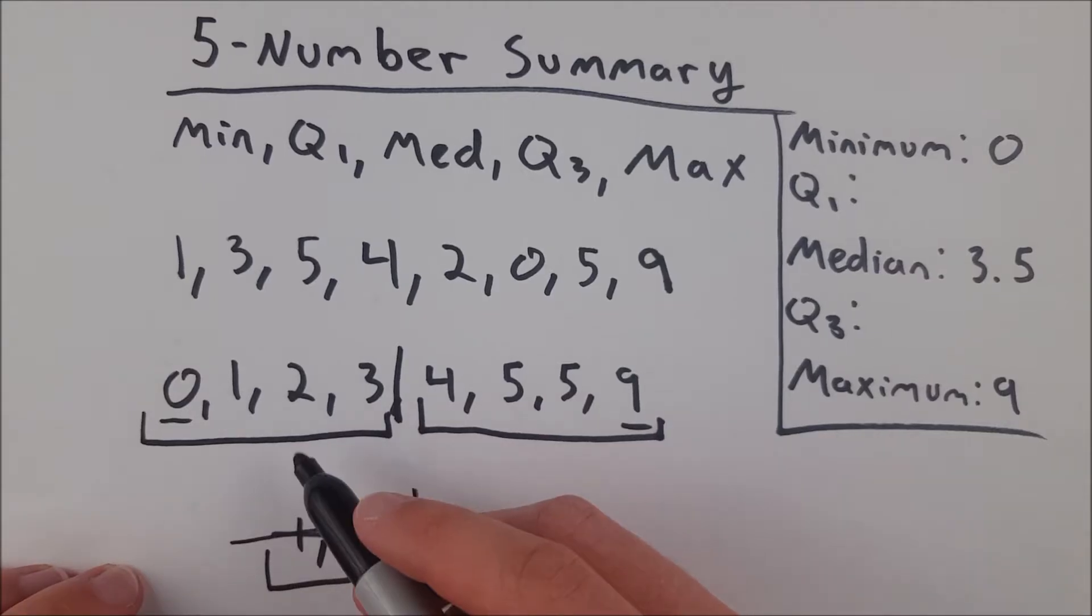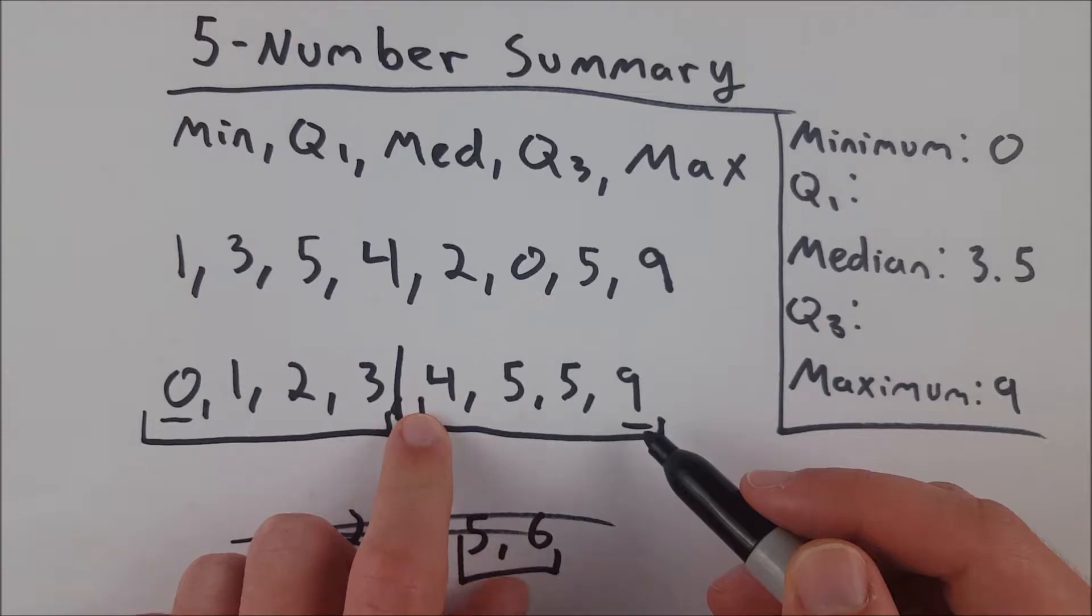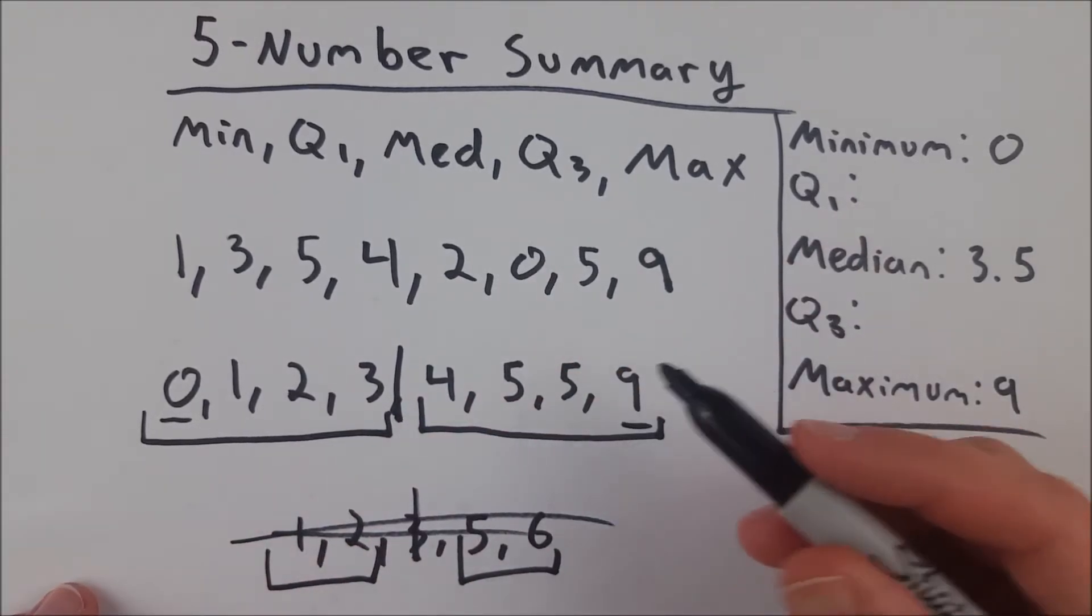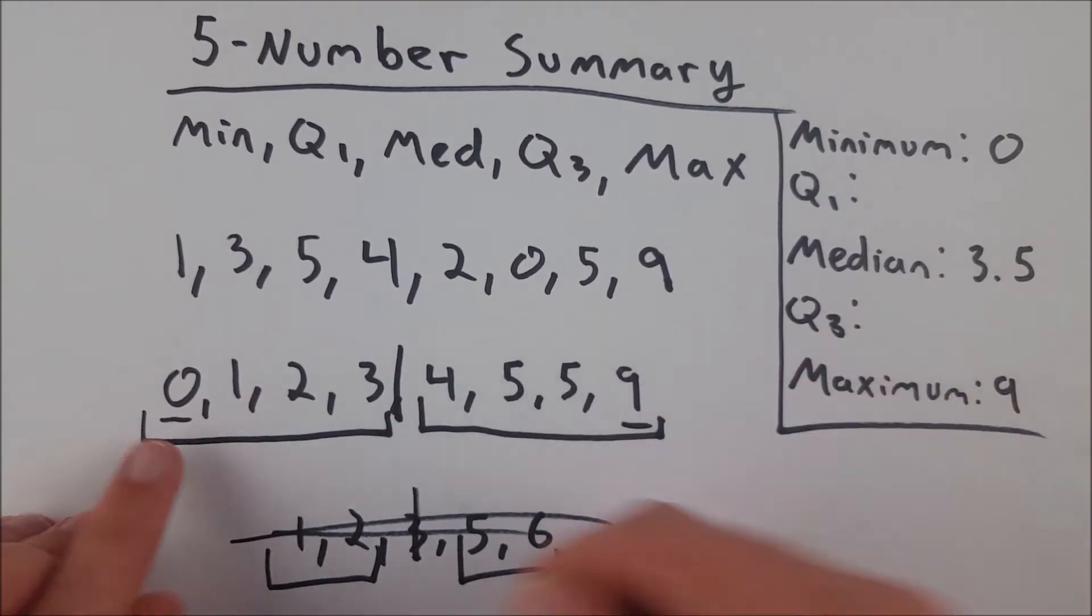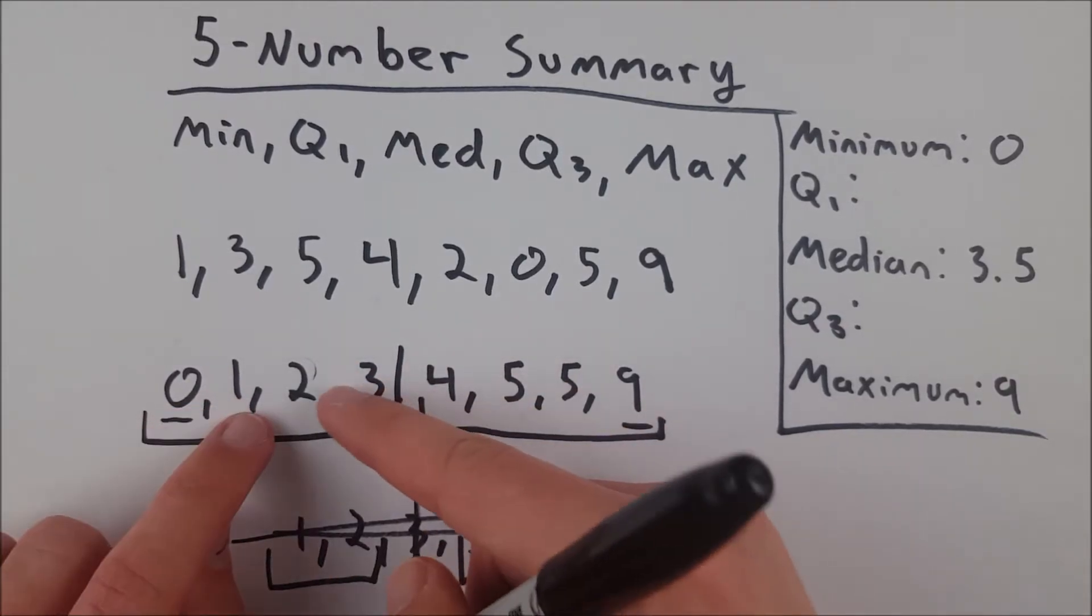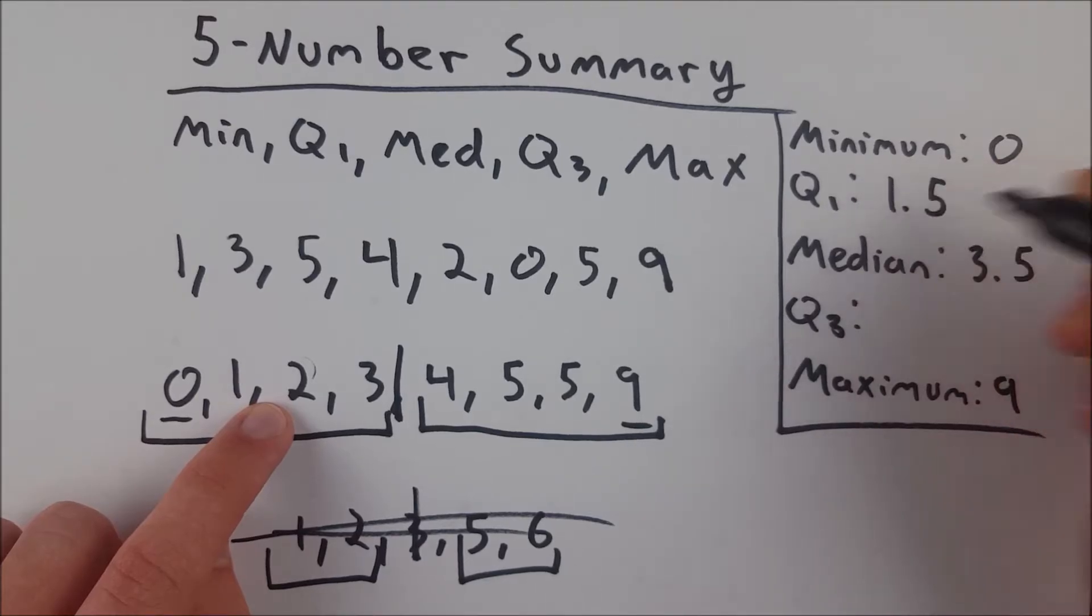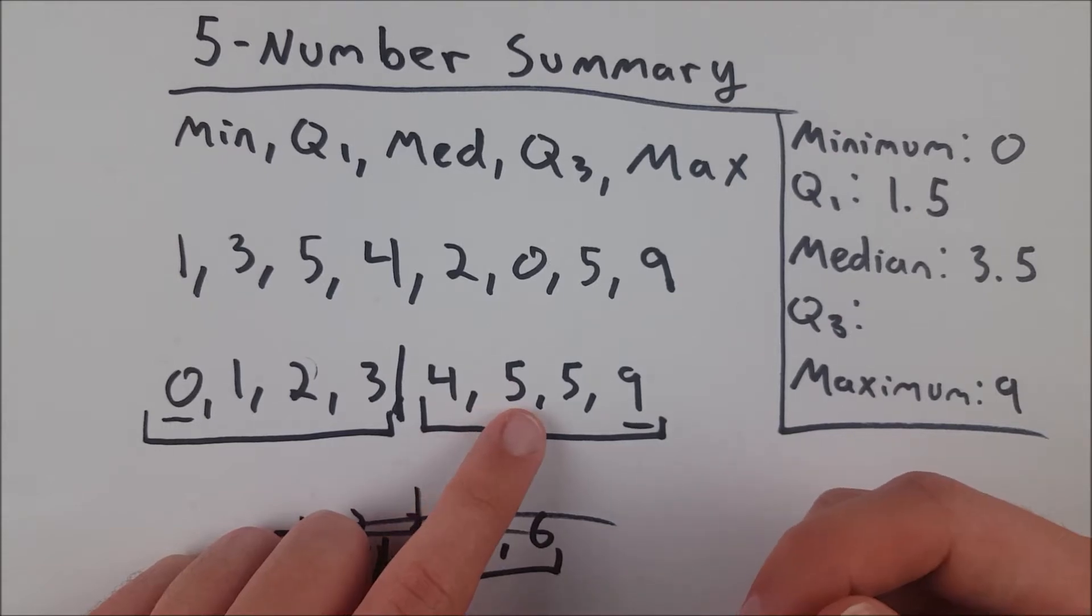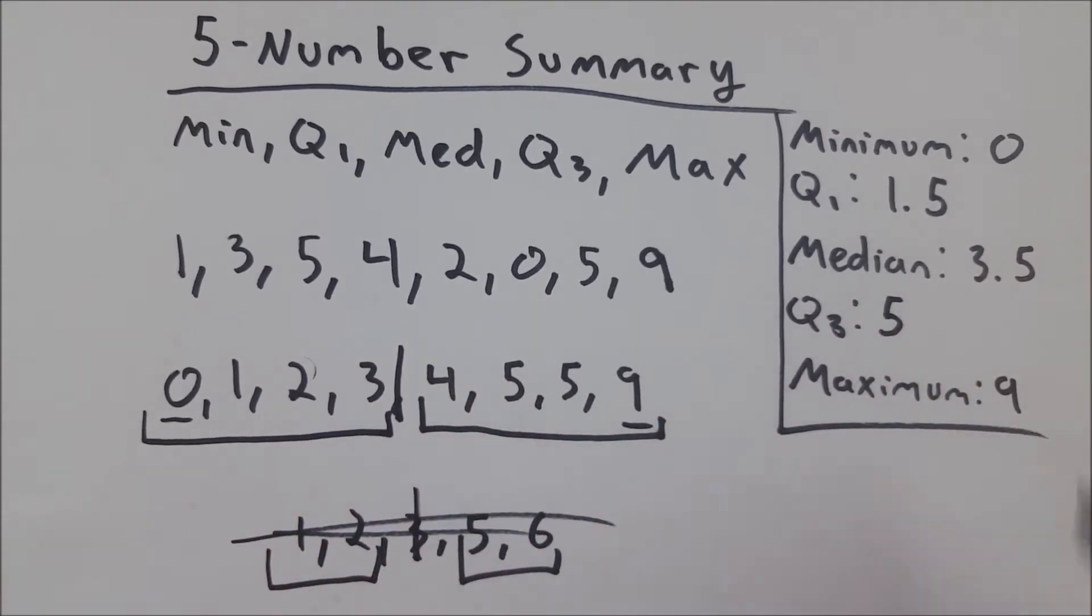So now all we have to do is find the median of this lower half of data and find the median of this upper half of data. And that's all the quartiles, at least the first and third quartiles are, is the median of the lower half and the median of the upper half. So again, we go in 1, we go in 2, we've got two numbers in the middle of this set of data. So we go halfway between them. That's 1.5. That's our first quartile. Same thing over here. We've got two numbers in the middle, but they happen to be the same number. So we can just take that number. And that's our five number summary.